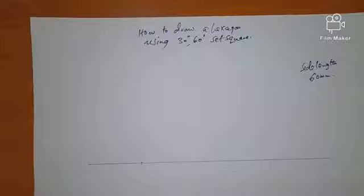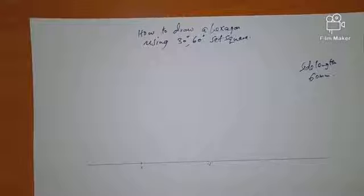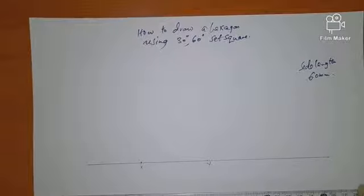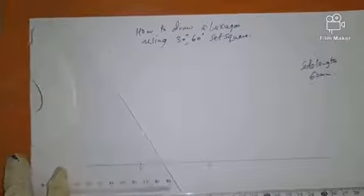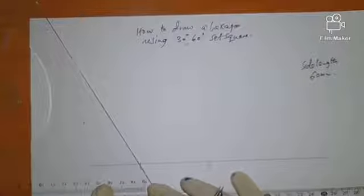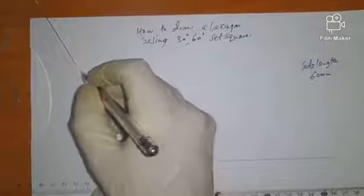We can call it XY. Once we have it, we can draw our 120 degree line using a 60 degree set square. Bring it here at X and draw the line.